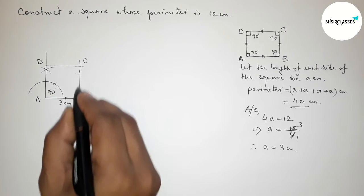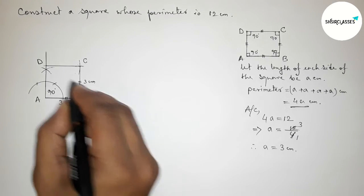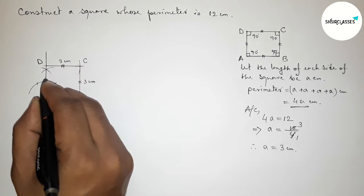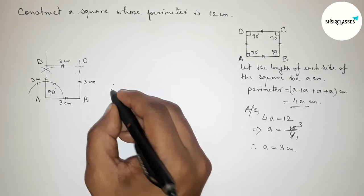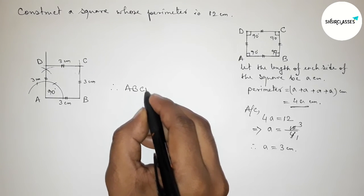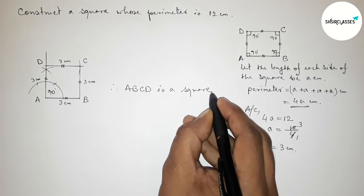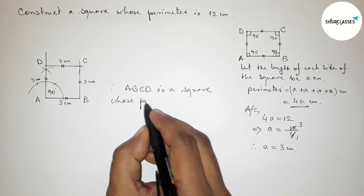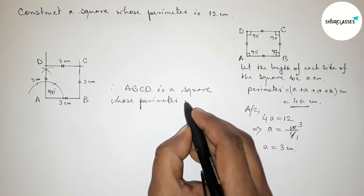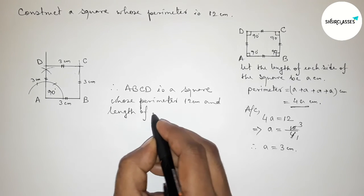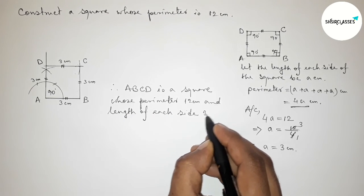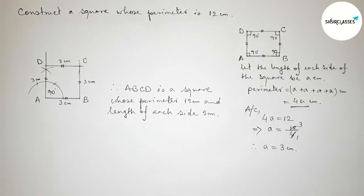All sides are equal: AB = BC = CD = DA = 3 centimeters. Therefore ABCD is a square whose perimeter equals 12 centimeters and the length of each side is 3 centimeters. That's all — thanks for watching. If this video was helpful, please share it with your friends.